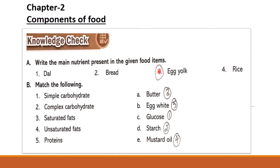Now number B — match the following. We have to match: number one simple carbohydrate, number two complex carbohydrate, number three saturated fats, number four unsaturated fats, and number five proteins, with: A butter, B egg white, C glucose, D starch, E mustard oil. Simple carbohydrate matches glucose, complex carbohydrate matches starch, saturated fats matches butter, unsaturated fats matches mustard oil, and proteins matches egg white.